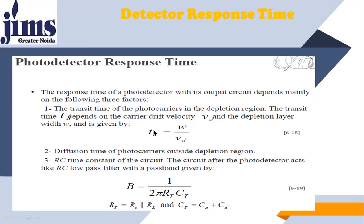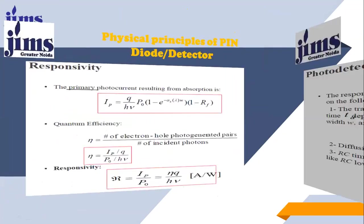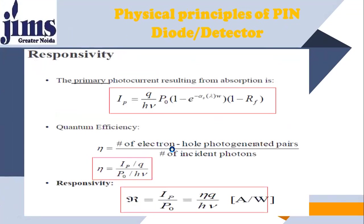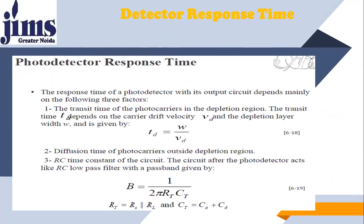So the transit time TD depends on the drift velocity VD and the depletion layer width W. The second factor is diffusion time of photo carriers after the depletion region. The third is the RC time constant of the circuit. The RC time constant comes into play because the depletion region behaves like a capacitor — charges accumulate on both sides, and a diode always forms a capacitor at its depletion region junction. That's why the RC constant comes into the picture.